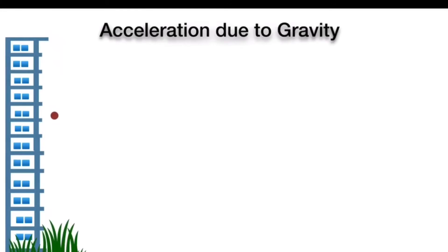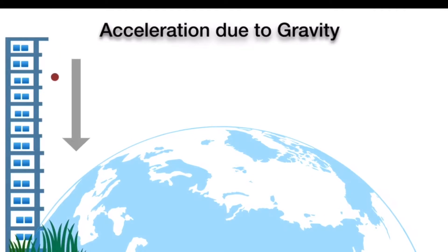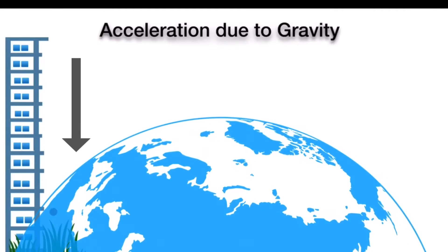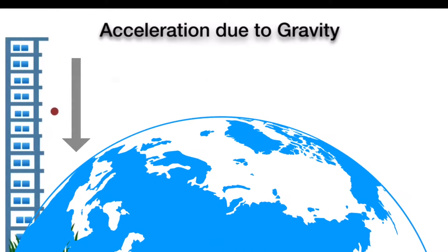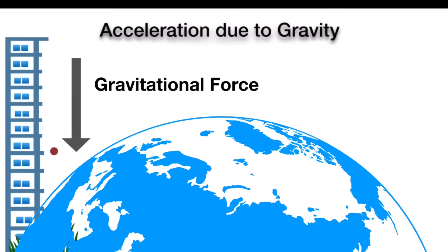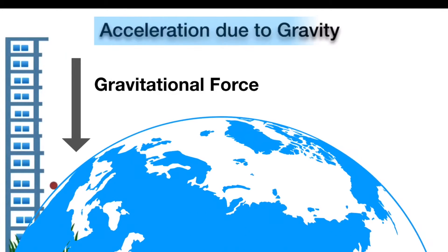If you drop a ball from the roof of a building, it moves toward the Earth because of a pulling force. This pulling force by the Earth is known as gravitational force. This gravitational force creates an acceleration in the object's motion, and that acceleration is known as acceleration due to gravity.